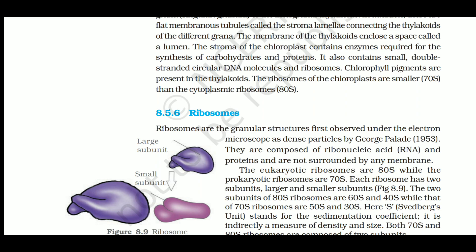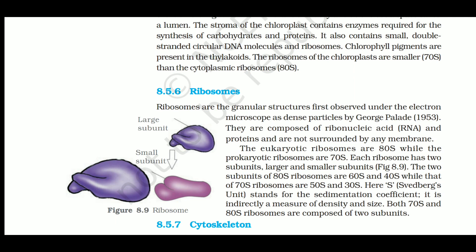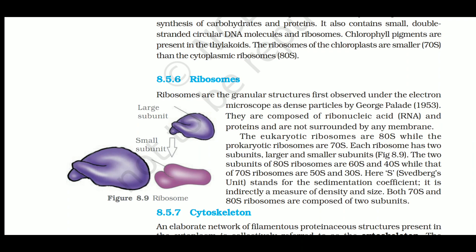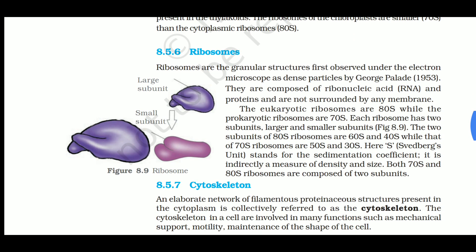The stroma of the chloroplast contains enzymes required for the synthesis of carbohydrates and proteins. It also contains small double-stranded circular DNA - so the DNA in both mitochondria and chloroplasts is circular. Chlorophyll pigments are present in the thylakoids. The ribosomes of the chloroplast are 70S, which are smaller than the cytoplasmic ribosomes, which are 80S.